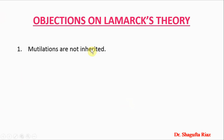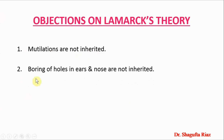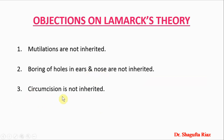The objections include: first, mutilations are not inherited — damage to or removal of an organ due to accident or disease is not passed to the next generation. Second, the boring of holes in ears and nose for jewelry is not inherited — newborn babies do not have holes in their ears or nose. Third, circumcision is not inherited — though circumcision is performed in Muslim families, newborn babies are not born circumcised. Therefore, we cannot say that acquired characters are inherited from one generation to another.